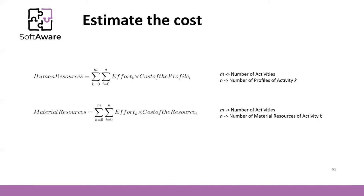To estimate the cost, we start from each work package. In each work package we have a human resources profile associated to perform that work package. Using that profile, we need to get an estimation of the cost of the profile. For example, if we have a junior programmer for a work package with an effort of 10 hours, we multiply the cost of the profile by the effort, then do this for all other tasks to get the total human resources cost of the project.